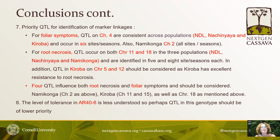One challenge is prioritizing among these 33 QTLs. Priority QTL for foliar symptoms would be chromosome 4, which is consistent and occurs in six site-seasons, and chromosome 2 for Namikonga. For root necrosis, QTL on chromosomes 11 and 18 occur in three populations and are identified in five and eight seasons respectively. QTL in Kiroba on chromosomes 5 and 12 should also be considered, as should four QTL influencing both necrosis and foliar symptoms: Namikonga chromosome 2 and Kiroba chromosomes 11, 15, and 18. The level of tolerance in AR40-6 is less understood, so its QTL should be lower priority.